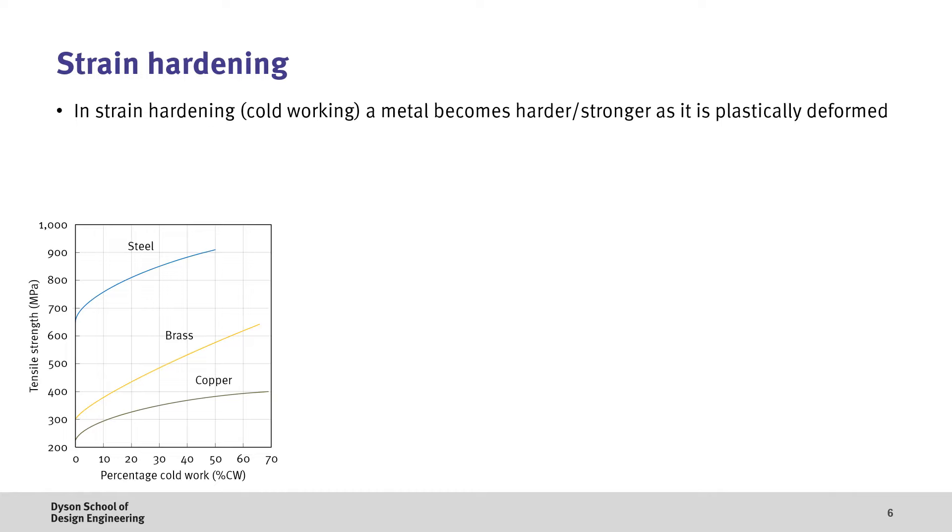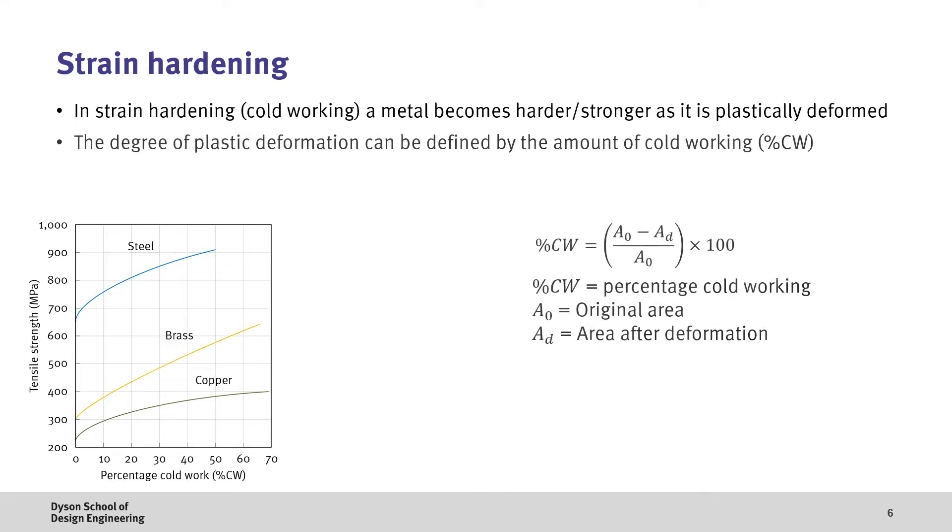Now previously we saw that we can control the grain size through controlling the processing temperature, but we can also do this by strain hardening or cold working the material whereby it becomes stronger through plastic deformation. This effect can be seen with steel, brass and copper. Here we can define the degree of plastic deformation by the amount of cold working which we take as the difference between the cross sectional area before and after deforming the metal over the original area.